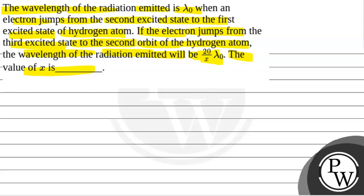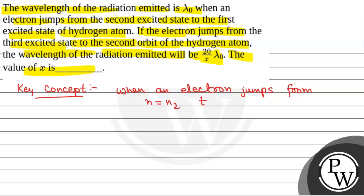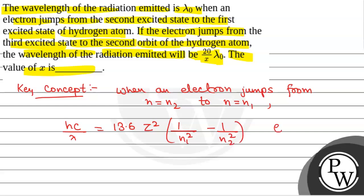We will solve this question. The key concept within this question is: when an electron jumps from n = n2 to n = n1, then we have hc/λ = 13.6 Z² (1/n1² − 1/n2²) in electron volts.